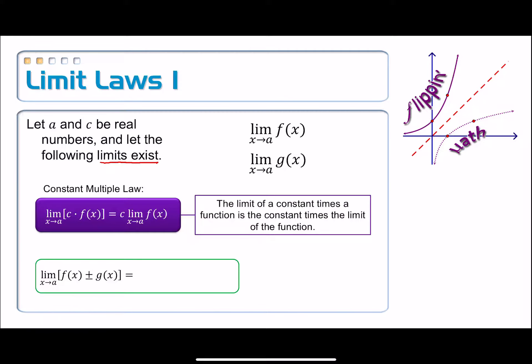which basically means that the limit of a constant times a function is that constant times the limit. So for example, if the value of the limit as x approaches a of f(x) was equal to 12, and we had 3 times that f(x), we can just take 3 times that 12. So very simple.